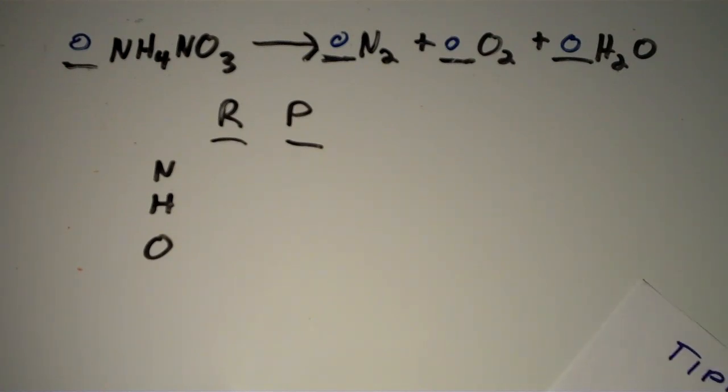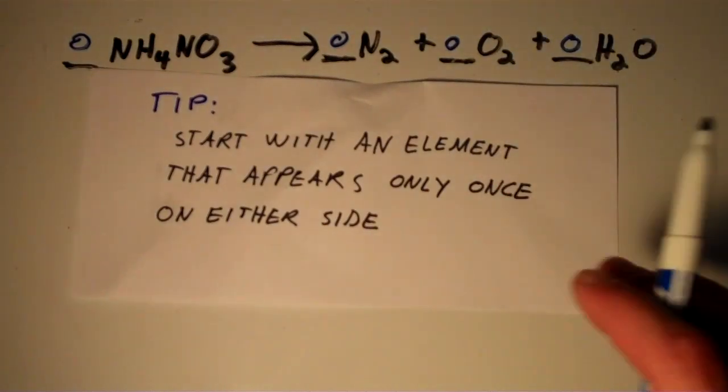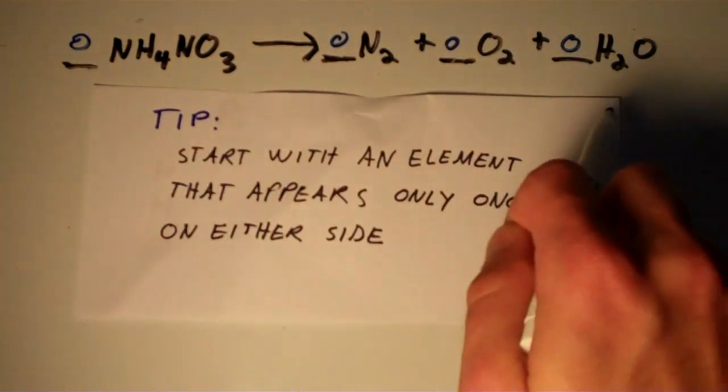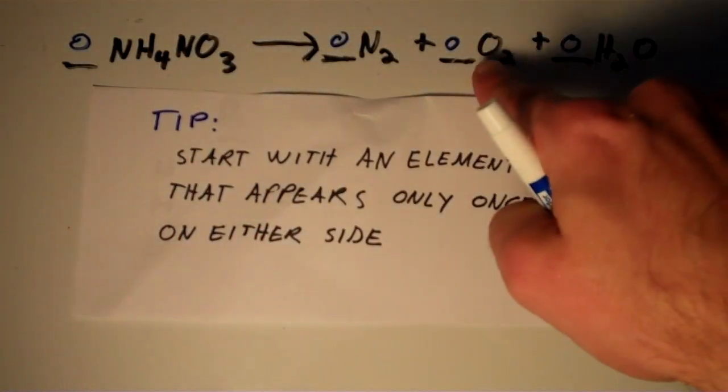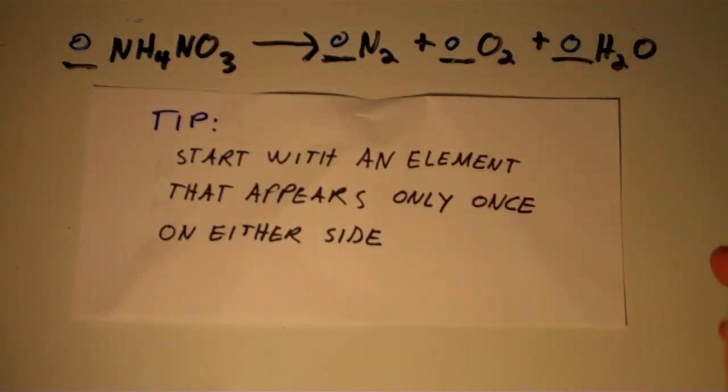When you're choosing an element to start with, remember to start with an element that appears only once on either side of the equation. In this equation here, you can start with nitrogen or hydrogen, but don't start with oxygen because oxygen appears twice on the product side of the equation, once as O2 and once as H2O.